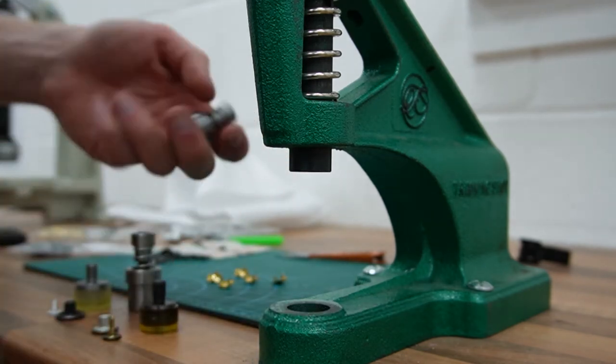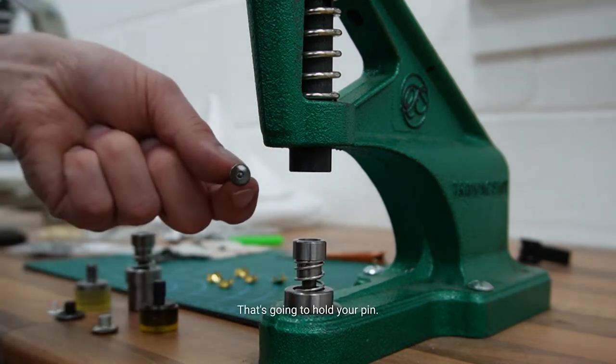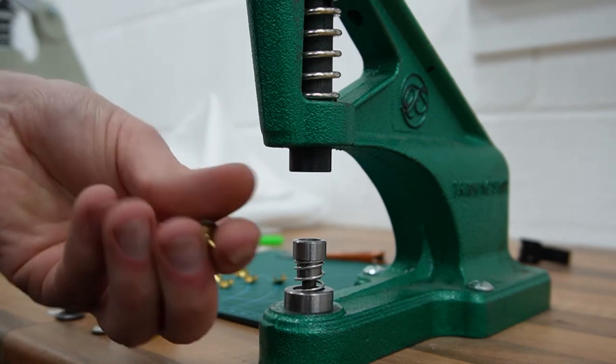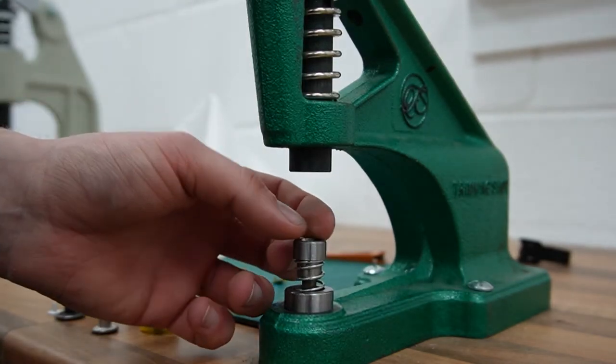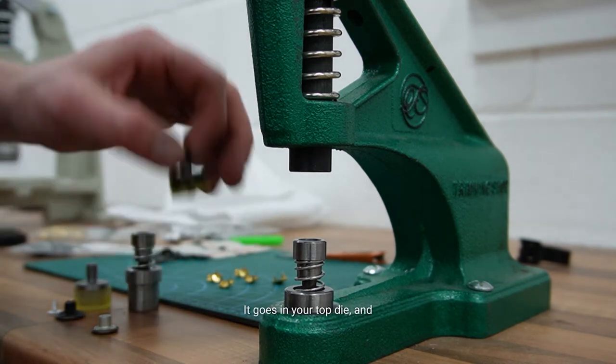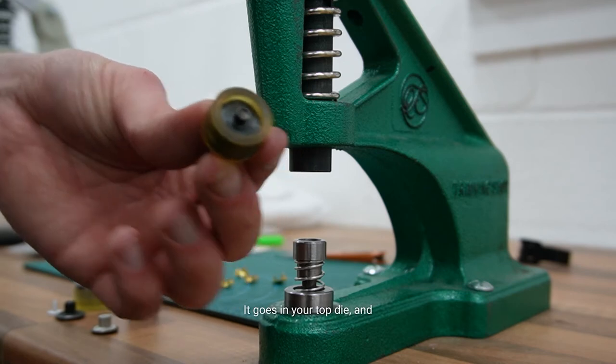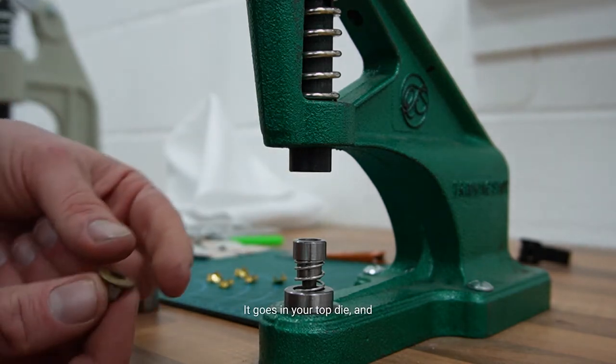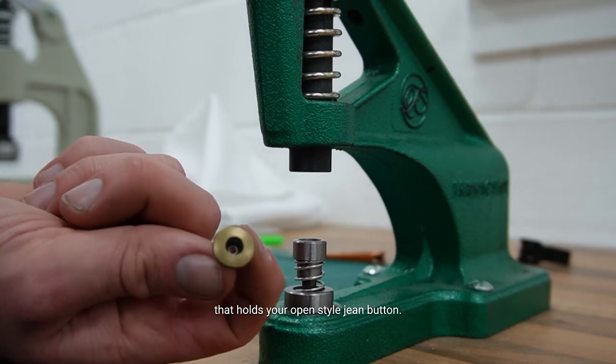This one we'll pop into the bottom - that's going to hold your pin. That goes in your top die and holds your open style jean button.